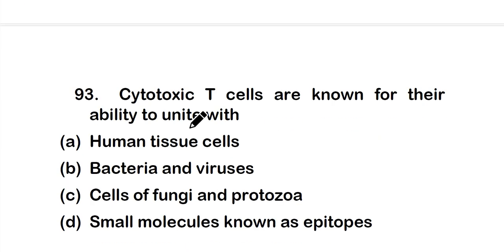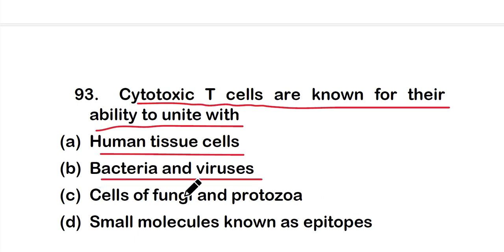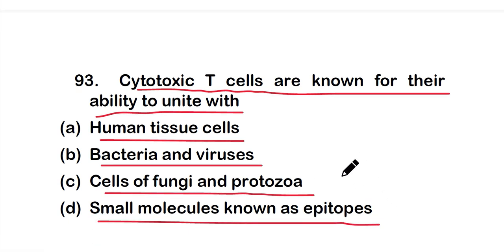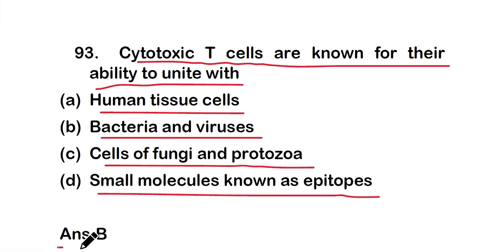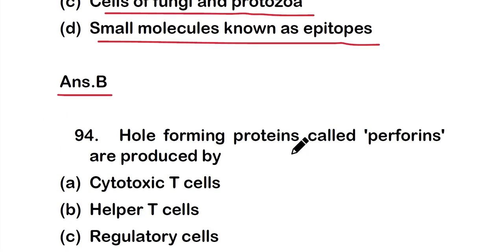Question number 93: Cytotoxic T cells are known for their ability to unite with — option A: human tissue cells, option B: bacteria and viruses, option C: cells of fungi and protozoa, or option D: small molecules known as epitopes. The right answer is option B — cytotoxic T cells unite with bacteria and viruses.